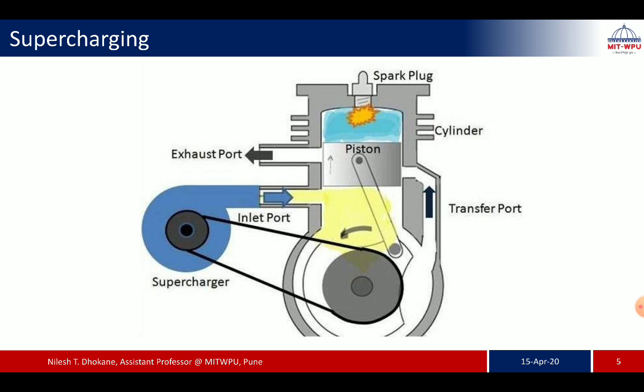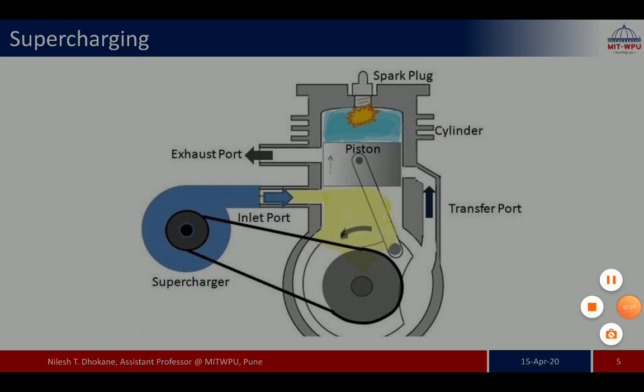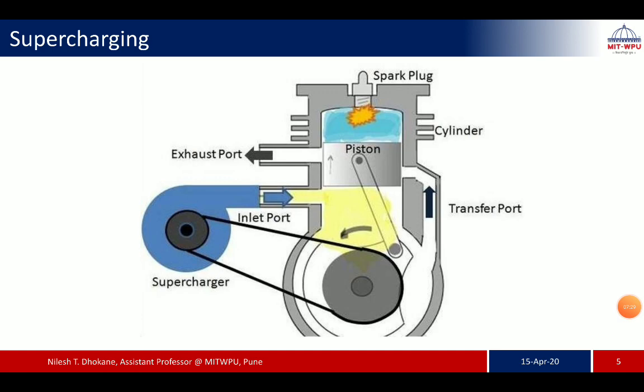Here you can see another image showing how a supercharger works. A centrifugal compressor is connected via a belt drive to the crankshaft. When air is taken inside the cylinder, it comes through the compressor so that more air — and more oxygen — is available for combustion, resulting in more power output per cycle.